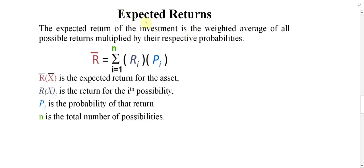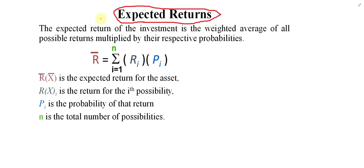Bismillahirrahmanirrahim. Next one is expected return. Expected return simply means forecasted return — how much return we expect from a security or investment in the future. How can we estimate our profit or return in the future if we invest in company A, B, C, or D? How can we forecast how much profitability we will get from a project if the following conditions happen?